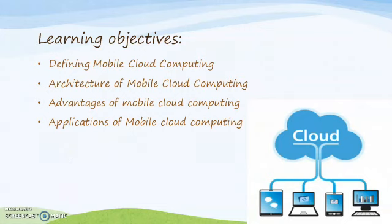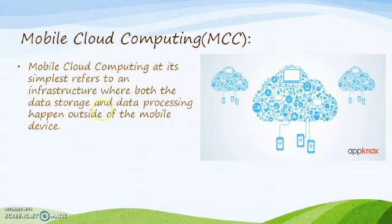First we move on to the Definition of Mobile Cloud Computing. At its simplest, Mobile Cloud Computing refers to an infrastructure where both the data storage and data processing happen outside of the mobile device. Mobile Cloud Applications move the computing power and data storage away from mobile phones and into the cloud, bringing applications and services not just to smartphone users but a much broader range of mobile subscribers.